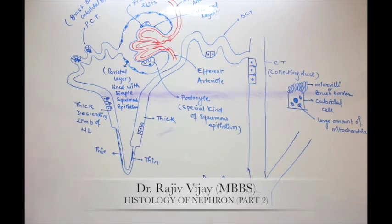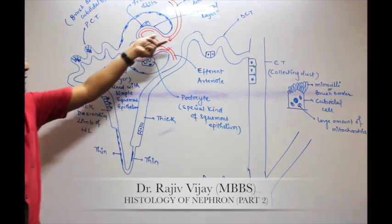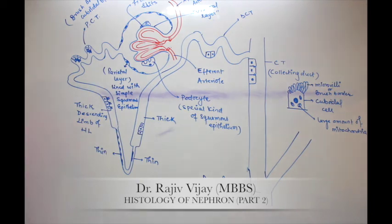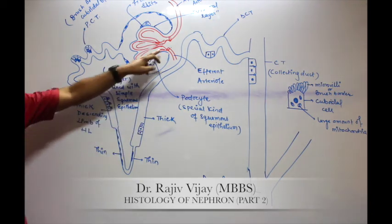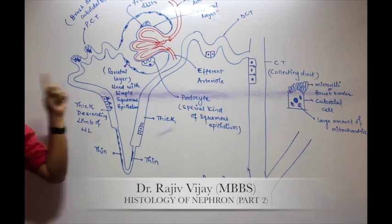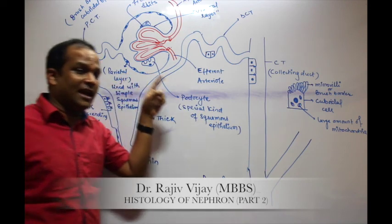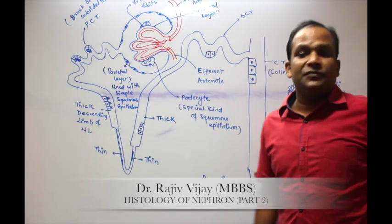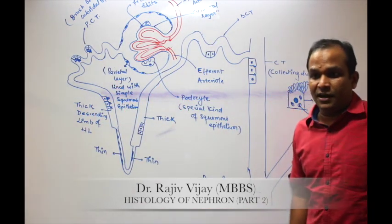One important point: the afferent arteriole has a bigger diameter, whereas the efferent arteriole has a smaller diameter. So the afferent arteriole diameter is bigger than the efferent arteriole.